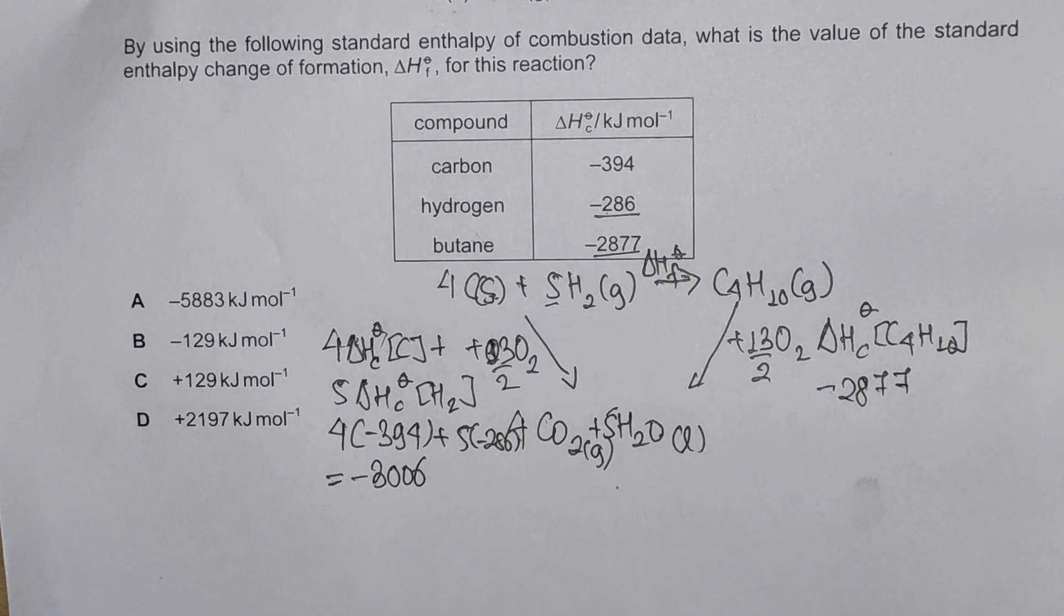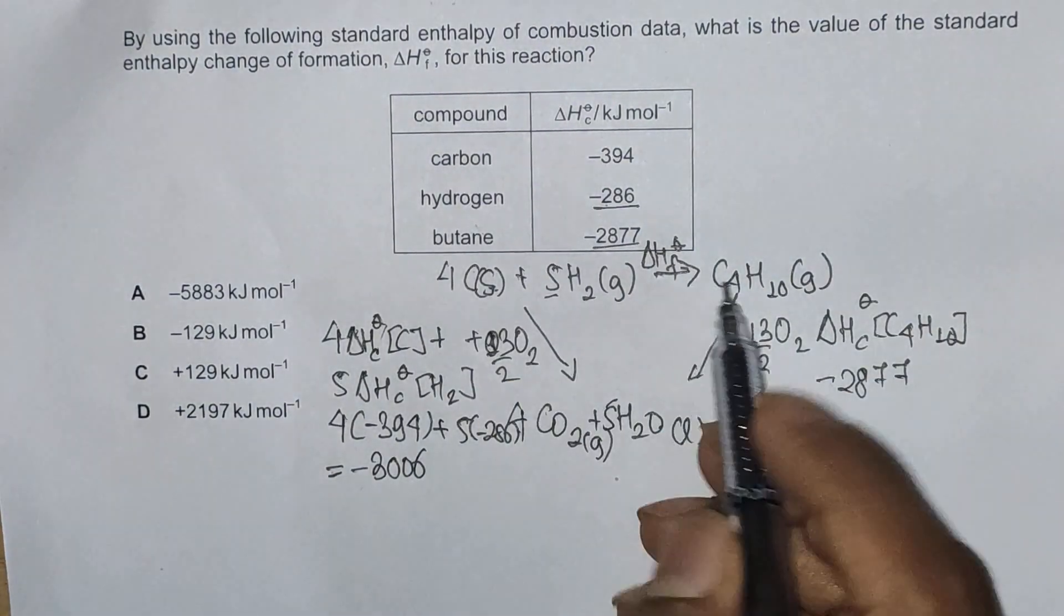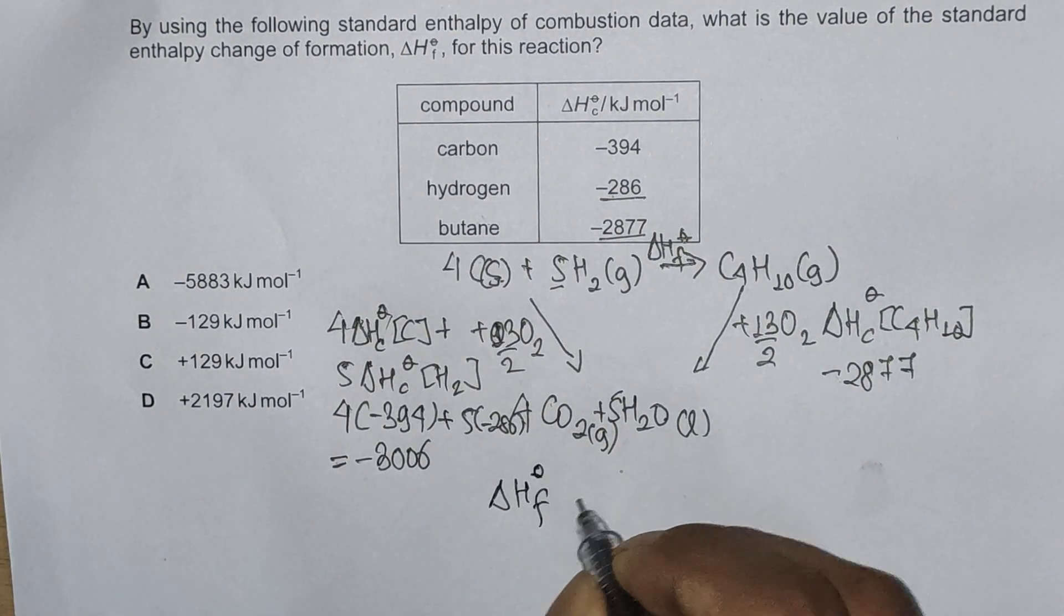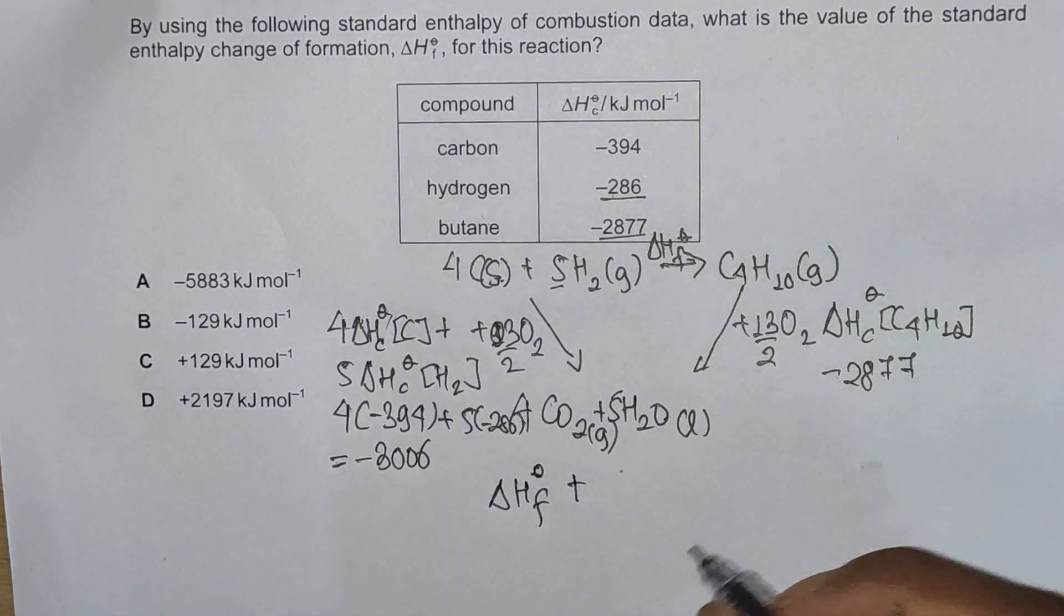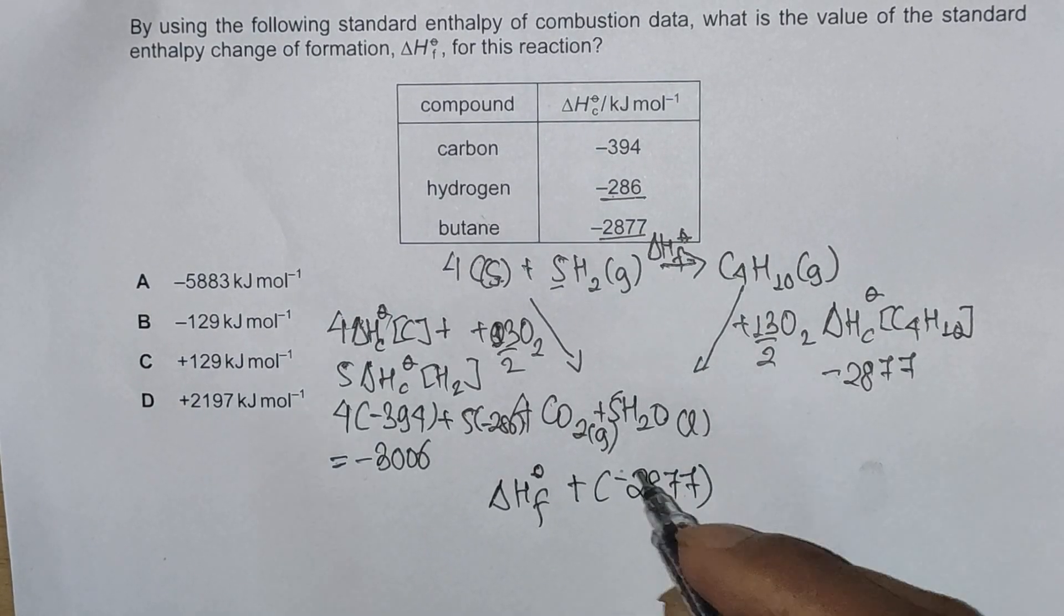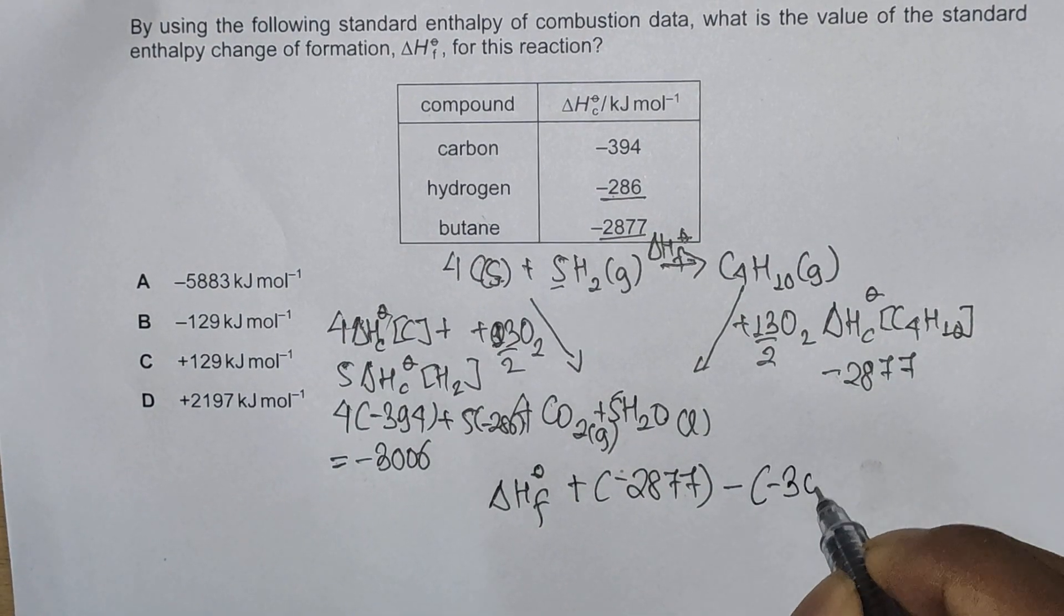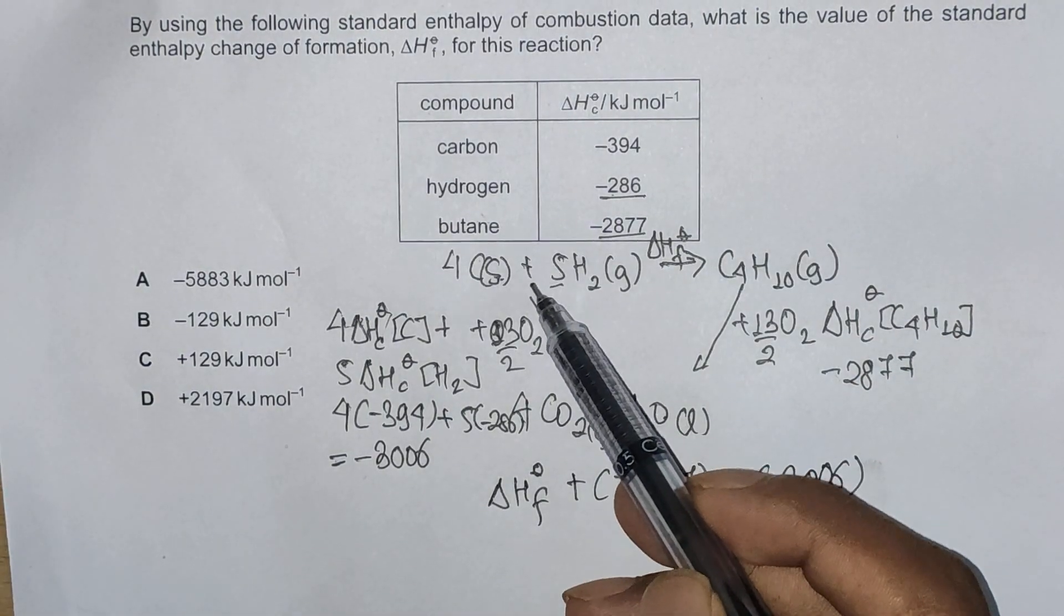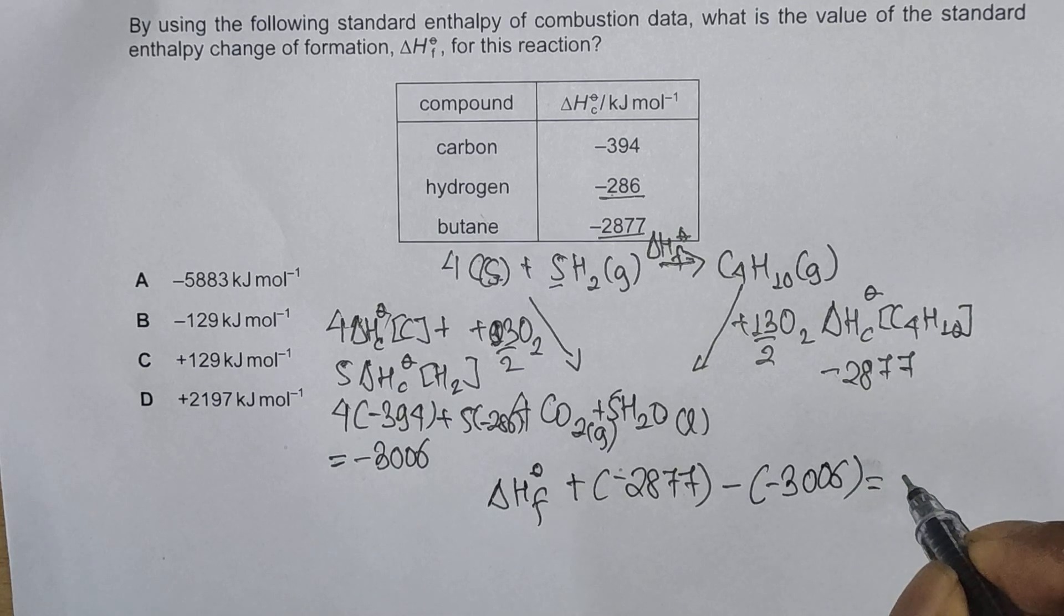Using triangle law of vector addition, we'll take this side, this arrow, as positive. So we'll have delta H naught F plus this value going downwards with the arrow, so plus negative 2877. Now here we are going against the arrow, so it should be minus, minus 3006. We are starting and ending in the same place, so addition of these all three should be zero.